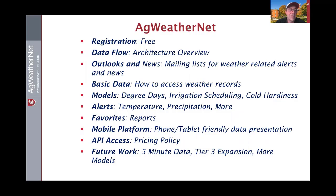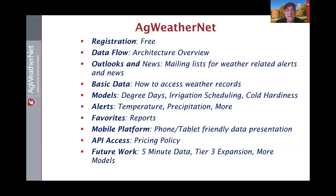We're going to take a look at the data flow of a weather station from weather observations to your device. A brief discussion of outlooks and news mailings, a quick look at how to get basic data, a review of some of the models, and how to configure an alert or favorite sent to your email or text. We'll also touch on API access, which is available for automated data access — however, there is a fee associated with that.